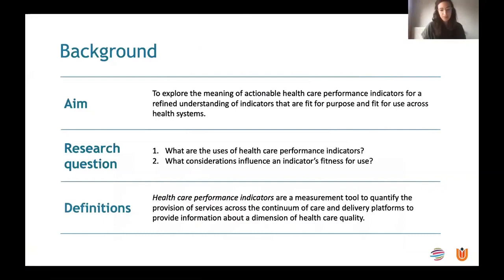In the context of healthcare performance indicators, like in chess, the different actors of the healthcare system also have different information needs — from the clinician improving their individual performance, up to the policymaker for high-level strategic decisions. It means there's not a one-size-fits-all when it comes to healthcare performance indicators. Yet what we observed in practice is that while we've developed a sophisticated understanding of criteria for valid and reliable indicators, less attention has been put to rigorously understanding what is meant by an indicator that is actionable. We were guided by two key research questions: first, what are the different uses of healthcare performance indicators, and second, what considerations influence an indicator's fitness for use.